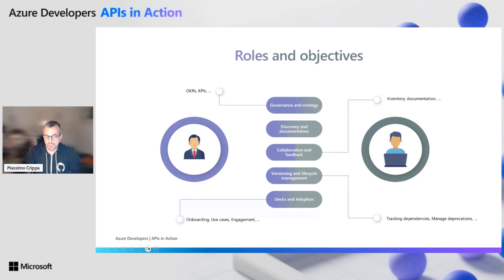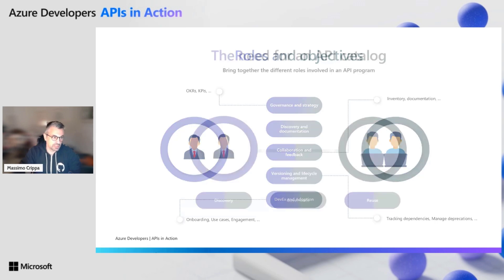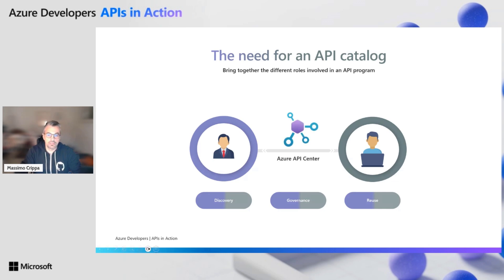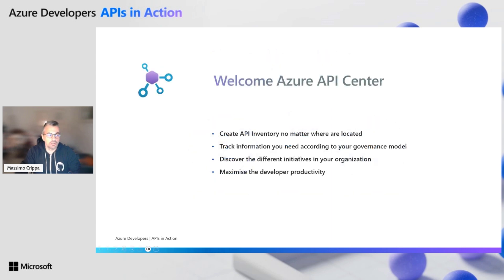So again, different roles, different objectives. But they have to come together with procedures, but also with tools. An API catalog, for example, is something that is really necessary to be successful in your API program. It's something that is necessary to discover the API, to keep an eye on governance, and very important to foster the user. And in this context, Azure came up recently with an offering called Azure API Center.